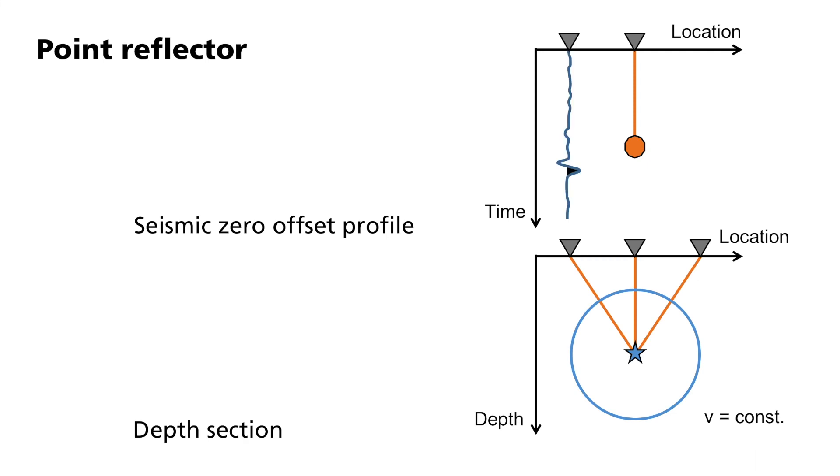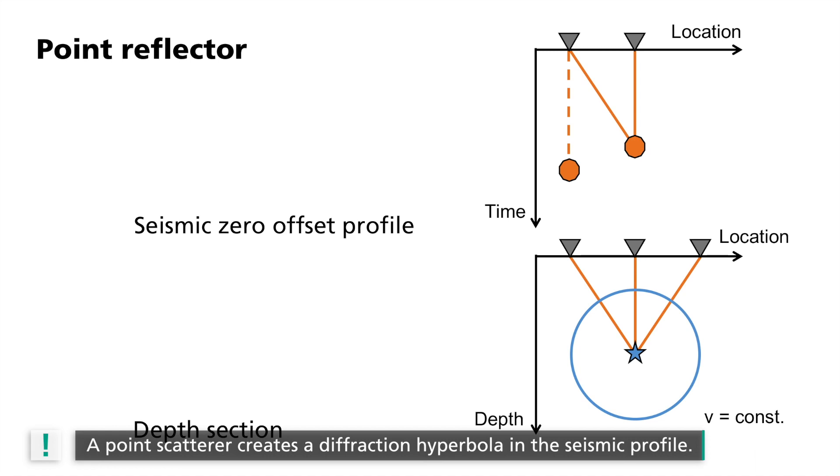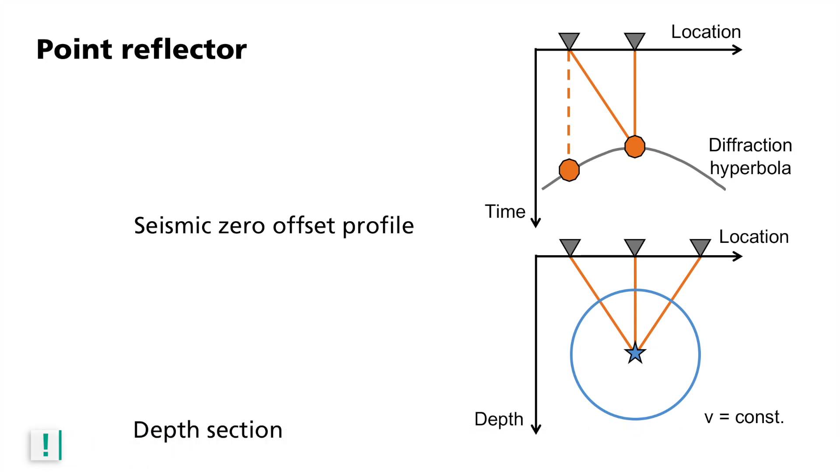However, in the zero-offset representation, it is also represented here at the location of the station, although the point-shaped scattering body is located away from it. Since the propagation is radially symmetric, the point-shaped scatterer creates a hyperbola-shaped curve in the seismic profile. It is also referred to as diffraction hyperbola, while the associated scattering body is called a diffractor.